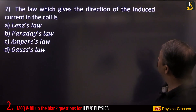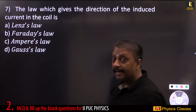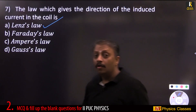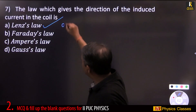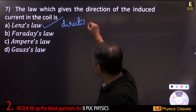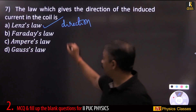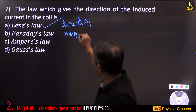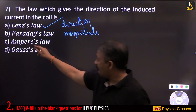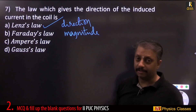The law which gives the direction of induced current in a coil is Lenz's law. Students, make a note: Lenz's law gives the direction; Faraday's law gives the magnitude. Ampere's law and others are different and have nothing to do with electromagnetic induction.